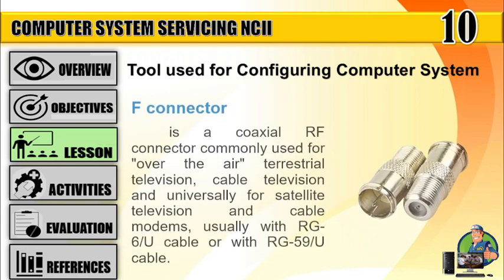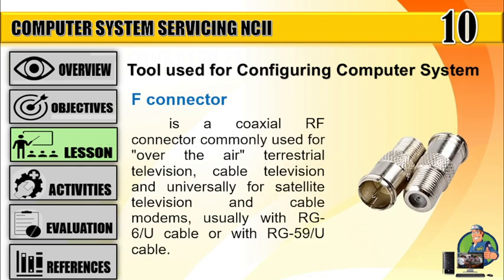Number 6: F-Connector — is a coaxial RF connector commonly used for over-the-air terrestrial television, cable television, and universally for satellite television and cable modems, usually with RG-6U cable or with RG-59U cable.